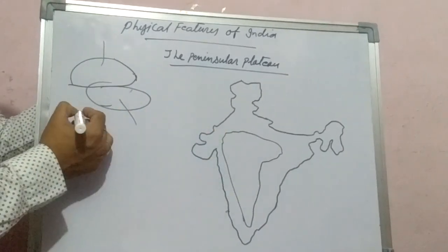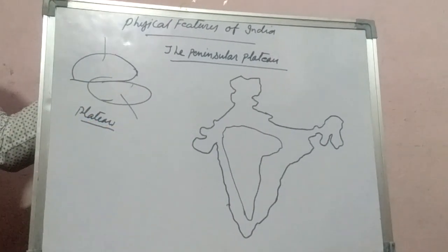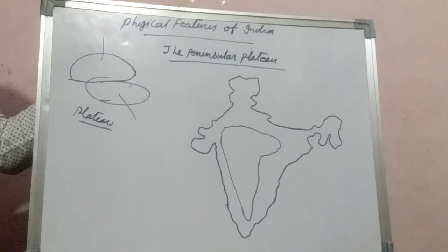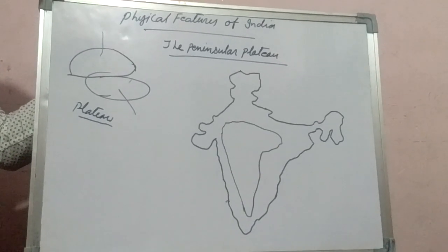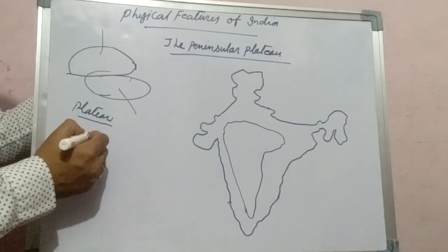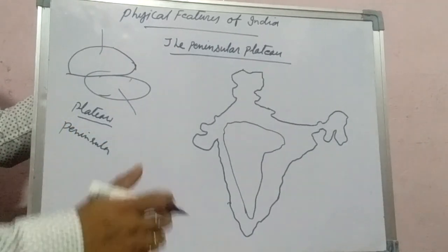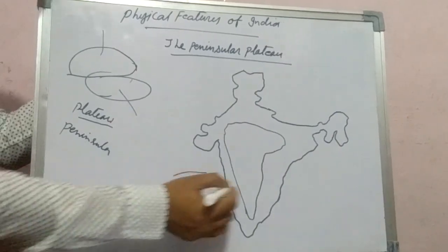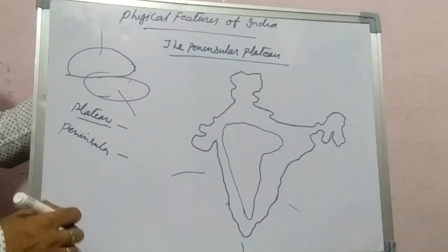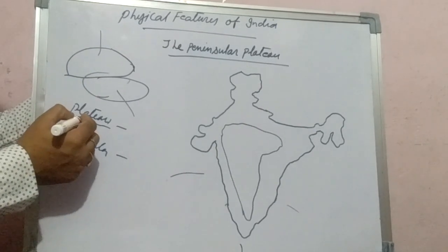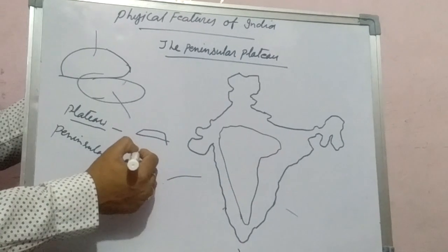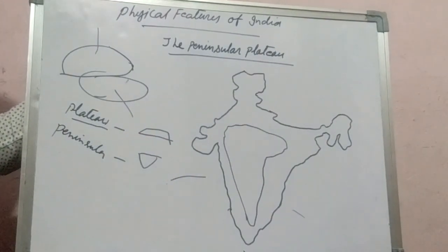First, I will tell you what is a Plateau. Plateau means an area of land that is high above the land or area which is around it. And what is called Peninsular? Peninsular means an area of land or piece of land that is surrounded by water on three sides. I think you can better understand both terms — Plateau and Peninsular.